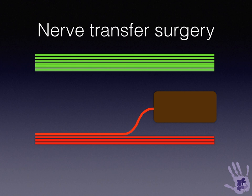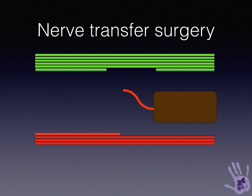Nerve transfer surgery involves an intact nerve with functioning fascicles shown in green, and a non-functioning nerve with a motor branch to a non-functioning muscle shown in red. Section and exploration of a fascicle within the donor nerve identifies an expendable fascicle that can be transferred onto the motor branch fascicle from the non-working nerve. This allows direct re-innervation of the muscle, very close to the muscle, using live, undamaged motor axons.